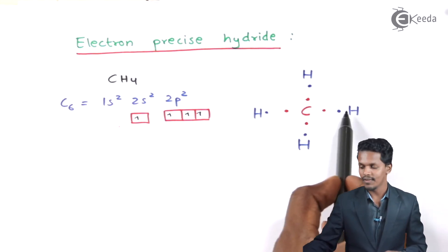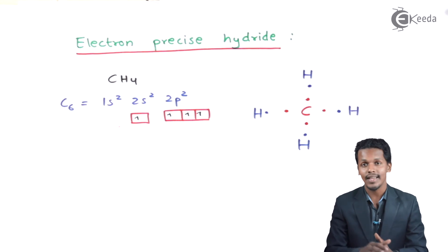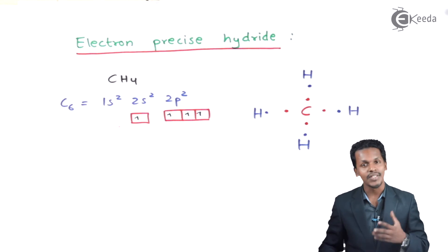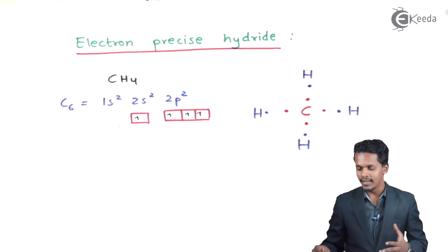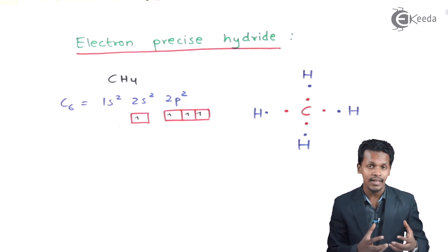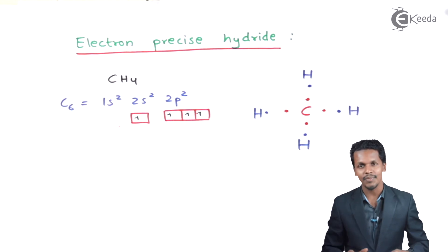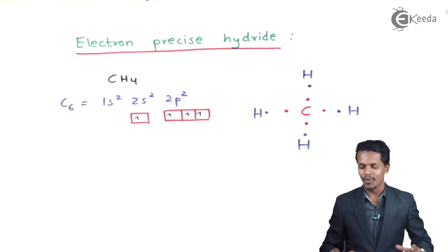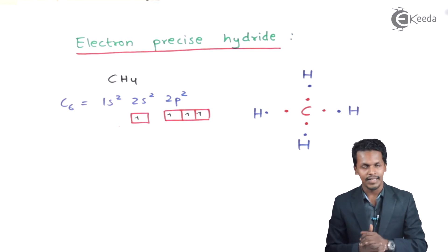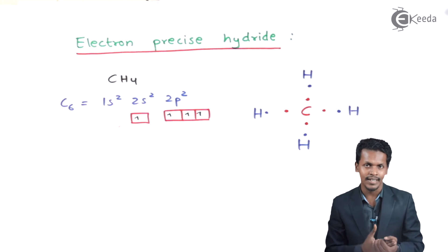So these 8 electrons make methane electron-precise — completing its octet exactly. In electron-precise hydrides, the central element has neither an electron deficiency nor an extra electron. CH4 is the classic example, and the entire carbon group — including silicon — can be considered electron-precise hydrides in terms of classification.